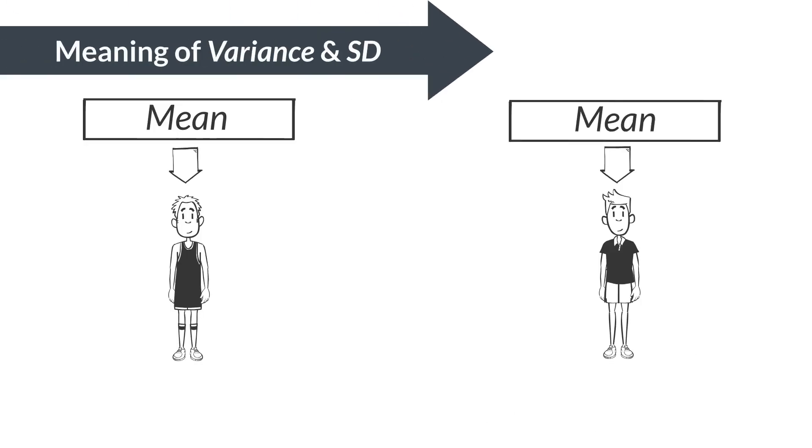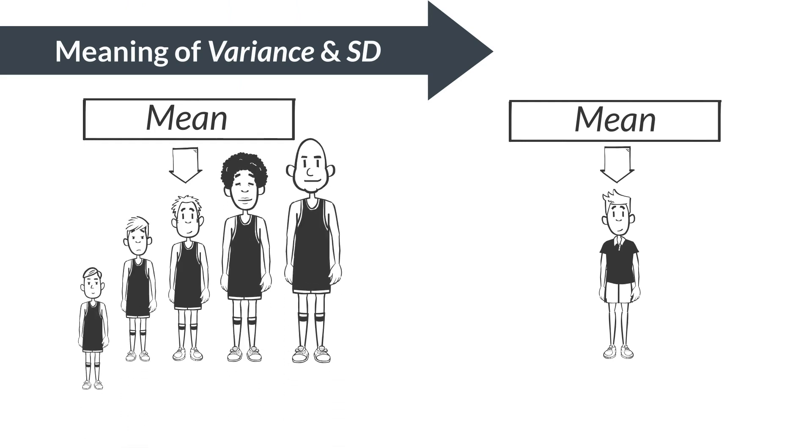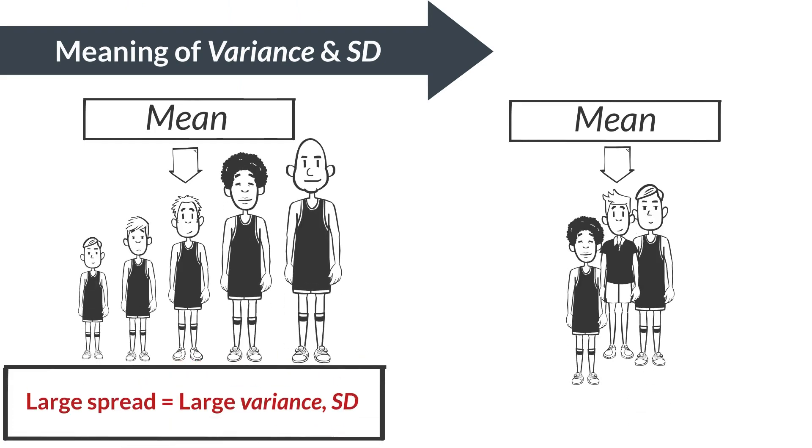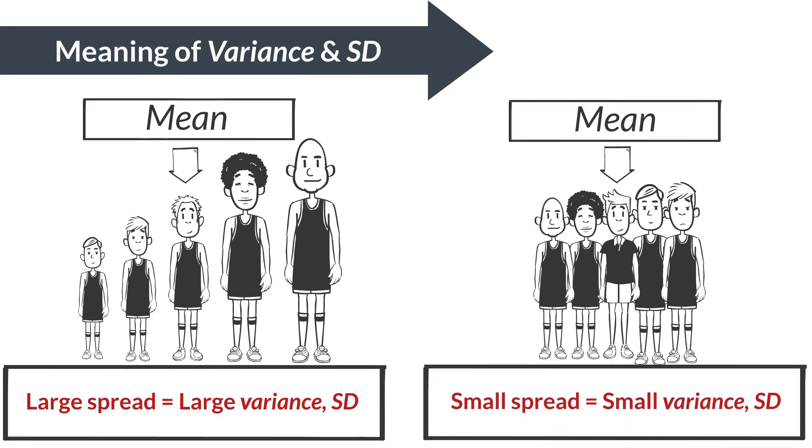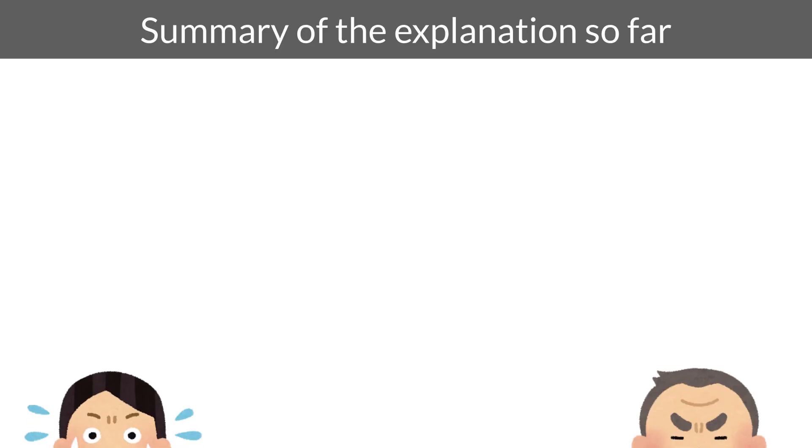In the end, the standard deviation and variance directly show how much the data is spread out. The standard deviation value can vary a lot for data sets with similar means but different distributions. Let me summarize the content so far in three points.